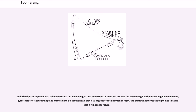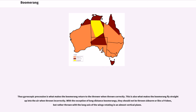While it might be expected that this would cause the boomerang to tilt around the axis of travel, because the boomerang has significant angular momentum, gyroscopic effect causes the plane of rotation to tilt about an axis that is 90 degrees to the direction of flight, and this is what curves the flight so that it will tend to return. Thus gyroscopic precession is what makes the boomerang return to the thrower when thrown correctly. This is also what makes the boomerang fly straight up into the air when thrown incorrectly.